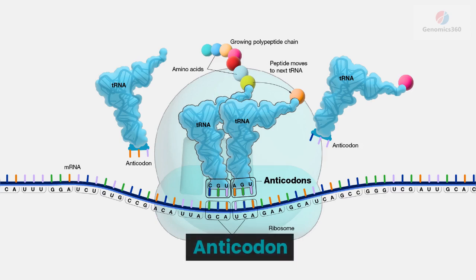Anticodon. DNA and the corresponding messenger RNA are made up of a series of bases. In RNA, these bases are often labeled with the letters A, U, C, and G. A set of three bases makes up a codon. Each codon instructs the cell to add a specific amino acid to the growing protein chain.